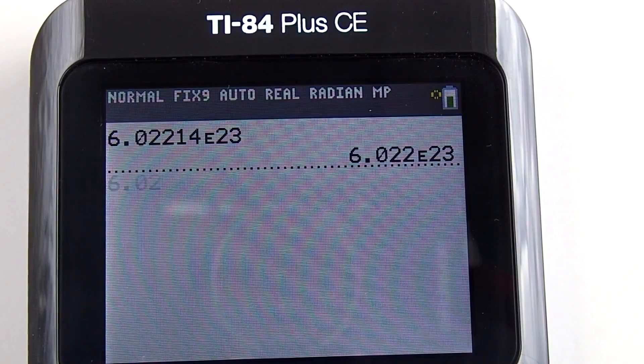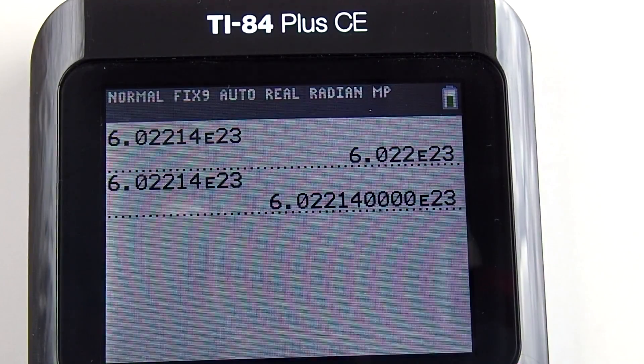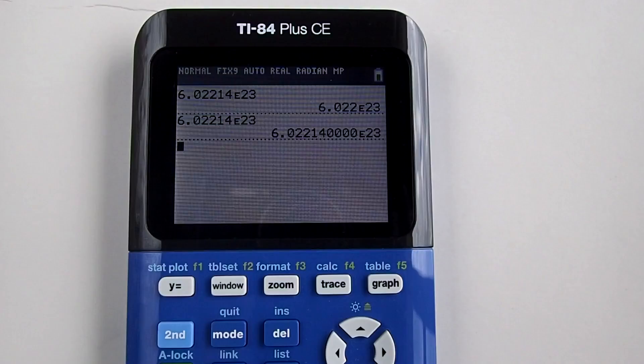Now press enter. Now you see the float set to 9 will give you 9 decimals whether you want them or not. Let's change our float again.